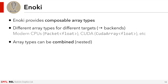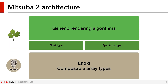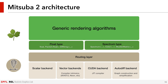These types can be composed by nesting them, and this is how we achieve automatic differentiation on the GPU. All the important operations are available, like math operations, reductions, masking, and so on. There is also support for virtual function calls on pointer arrays, which is essential when different materials are intersected in a wavefront path tracer. All of the platform-specific details live in Enoki, for example the intrinsics needed to write vectorized operations, and this enables us to write much cleaner code in the renderer itself.